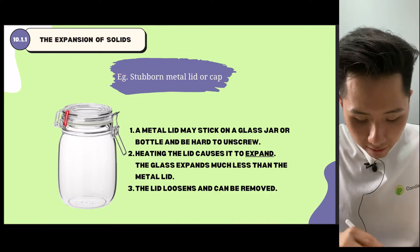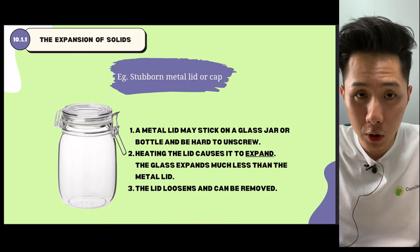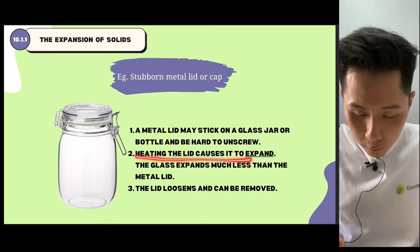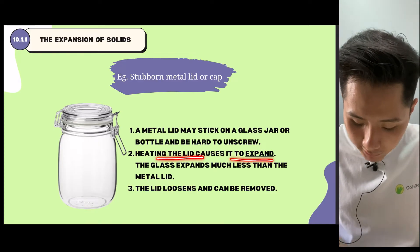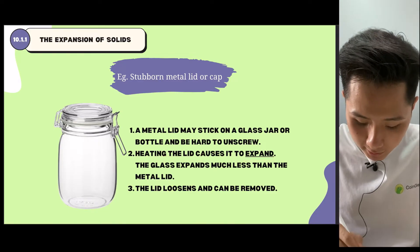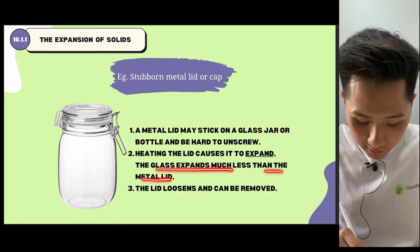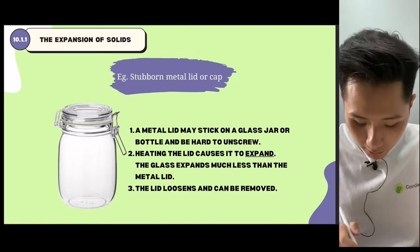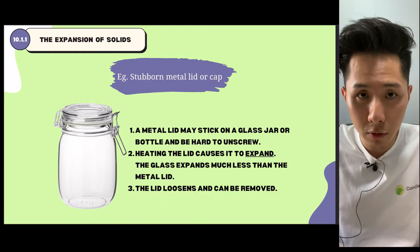Here I have a stubborn metal lid or cap. We all have this scenario where we cannot open the cap. Heating it will help us to open it, because heating the lid will cause it to expand. The glass will expand much less than the metal lid, which will create a space, and the lid will then loosen and can be removed.